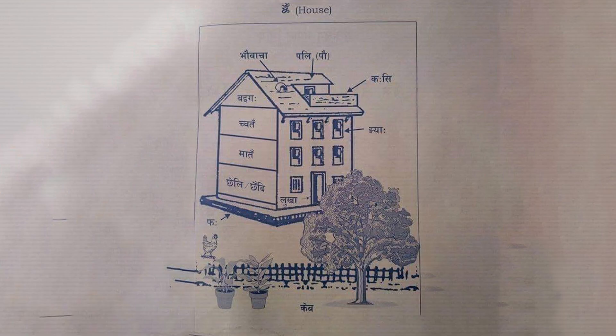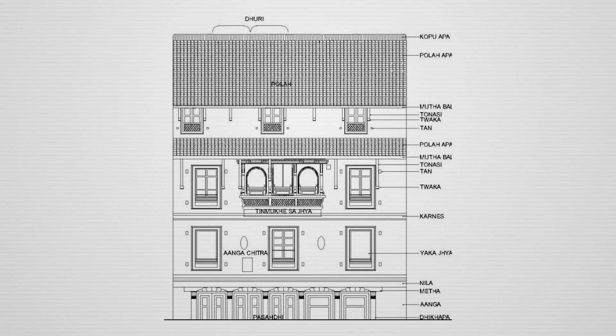Traditional Newari houses were meticulously designed on a rectangular layout and crafted to stand between two to three stories in height, ranging from 2.3 to 2.5 meters. The structures were vertically oriented — a design approach that skillfully integrated the practical purposes for each floor while also mirroring the way of life embraced by the inhabitants.